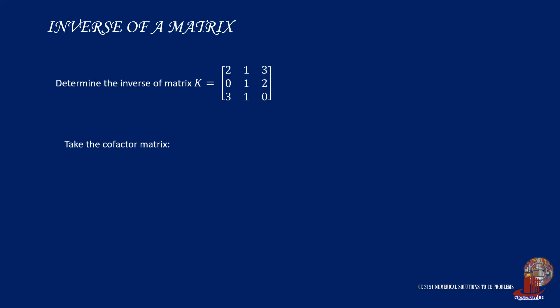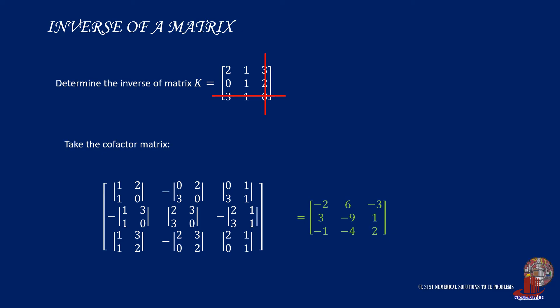For element 3,1, the cofactor involves 1, 3, 1, and 2. For element 3,2, it is taken as negative of the submatrix 2, 3, 0, and 2. And finally, element 3,3 will have the submatrix with 2, 1, 0, and 1. Taking the determinants of these submatrices will show the following cofactor matrix.